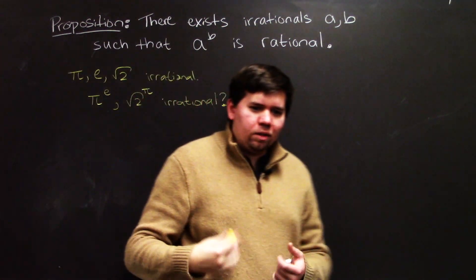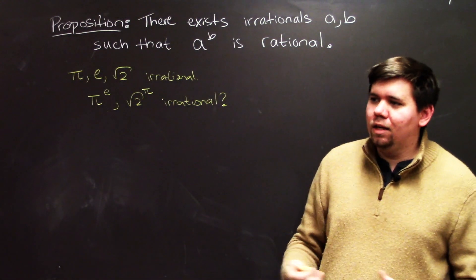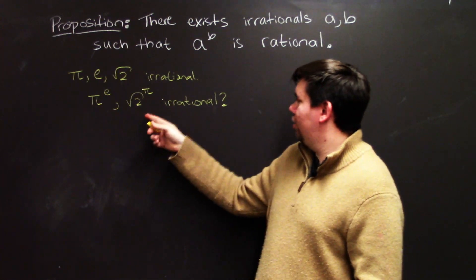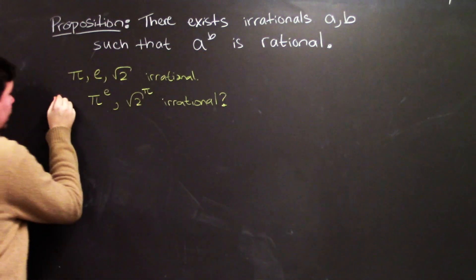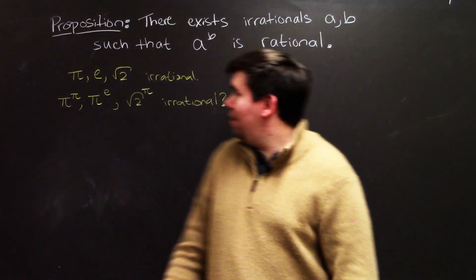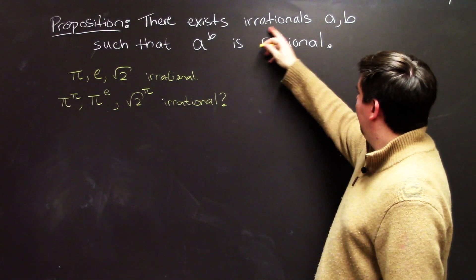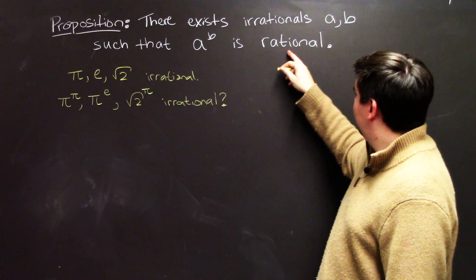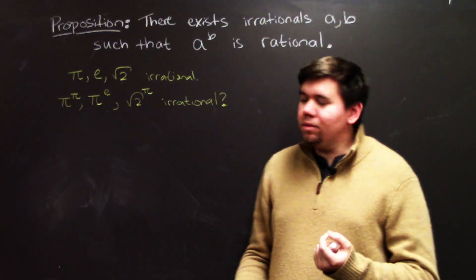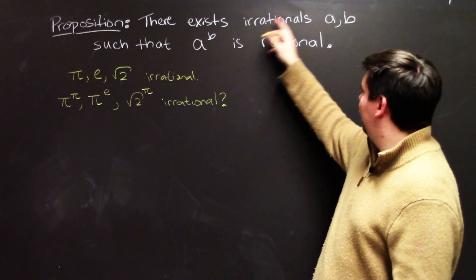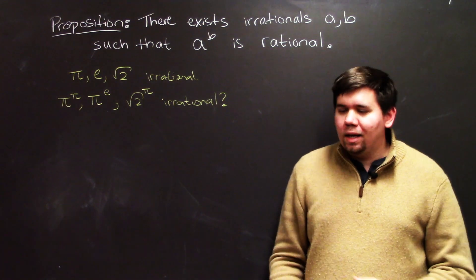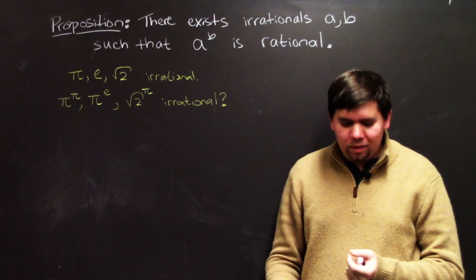The general intuition is that irrational numbers are complicated. If you combine an irrational with an irrational — or even raise an irrational to itself, like pi to the power of pi — it's still going to be complicated. So you might think combining two irrationals will still give you an irrational. But I'm claiming there exist two irrational numbers where raising one to the power of the other actually gives a rational result. The proof method for this is particularly elegant.